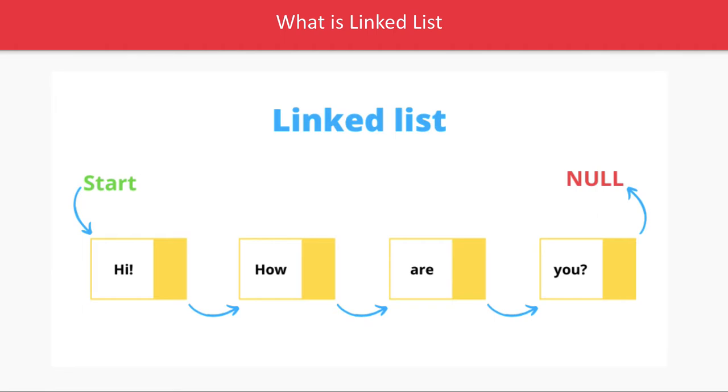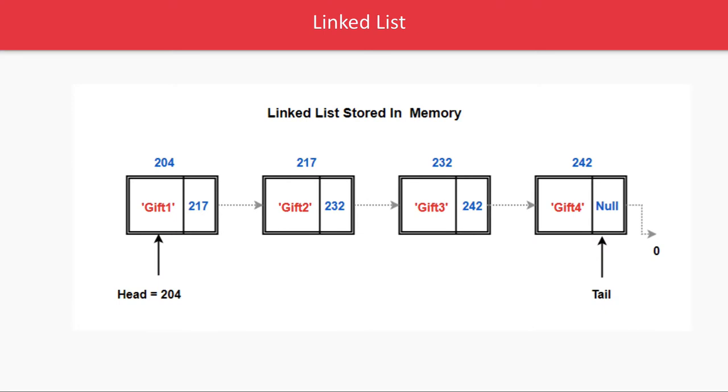If your last element this is the end of this sequence then it will point to null means there is nothing beyond it. And there is a start node means we are starting with hi, hi is linked to how, how is linked to R, R is linked to U with some link. Link is just a pointer or memory reference something like this.